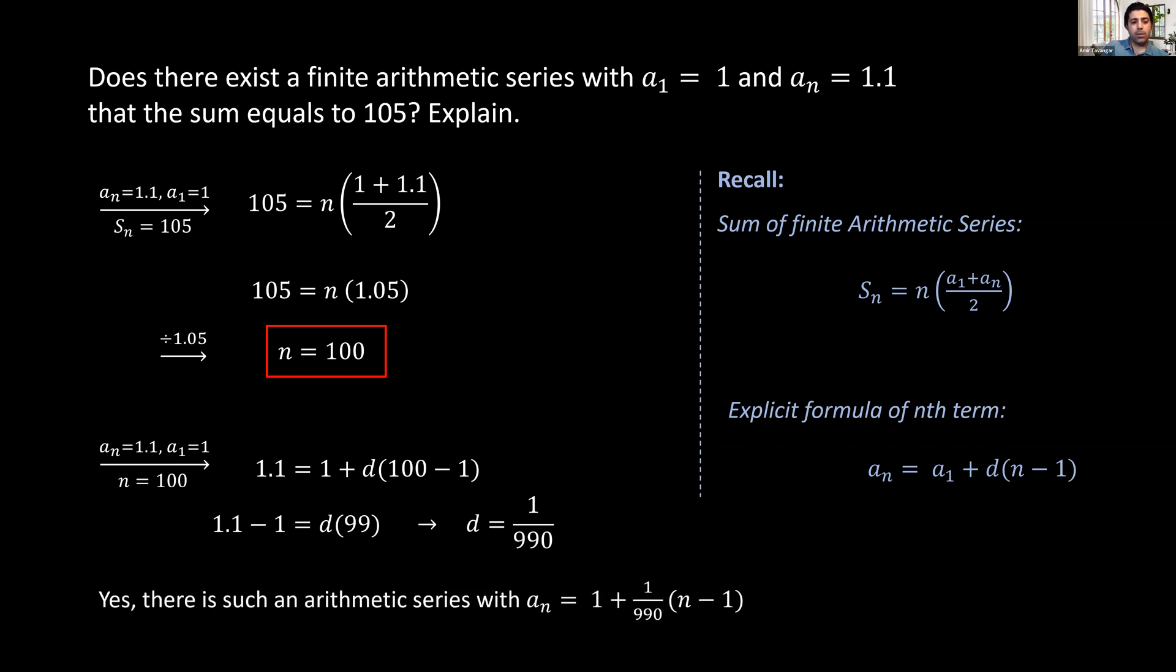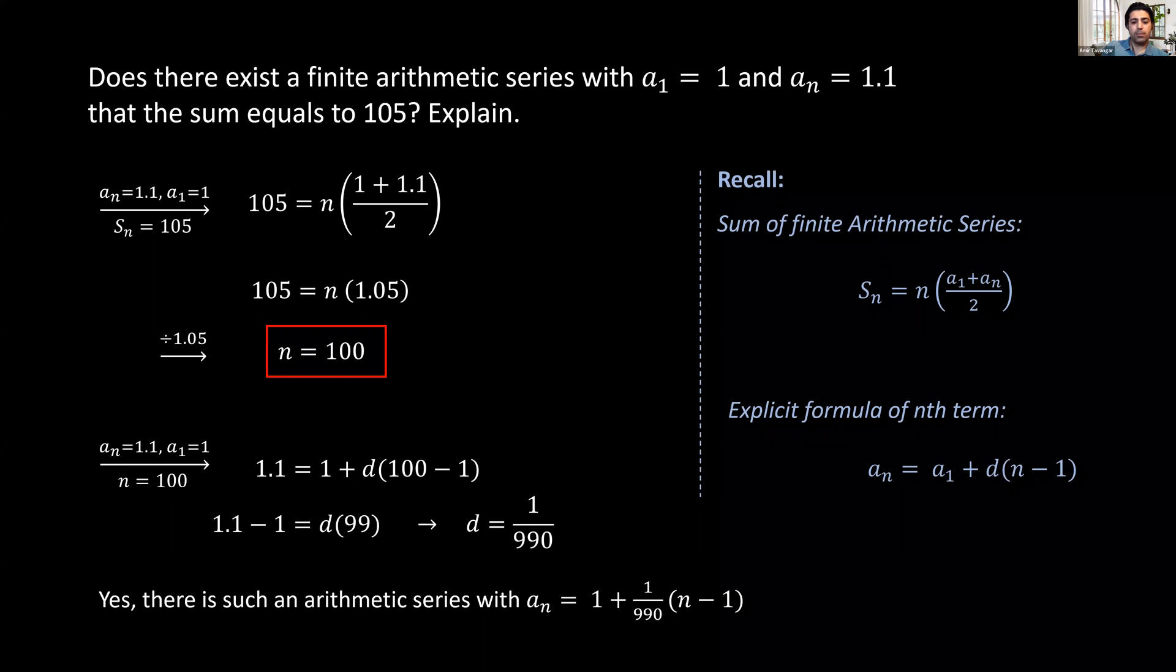And we can conclude that yes, there is such an arithmetic series with explicit formula of the nth term of 1 plus 1 over 990 times (n minus 1). Thanks for watching.